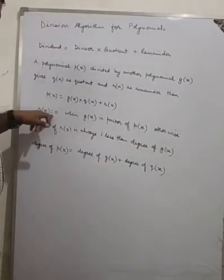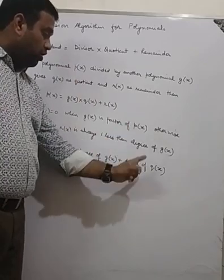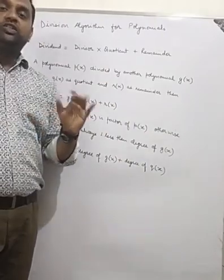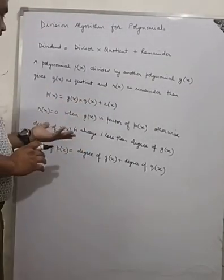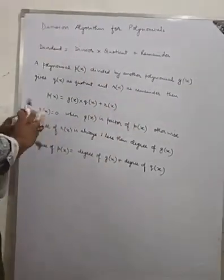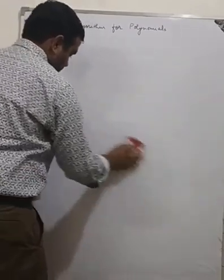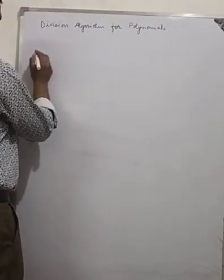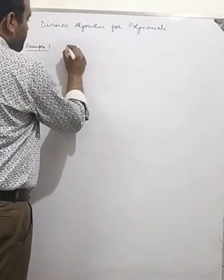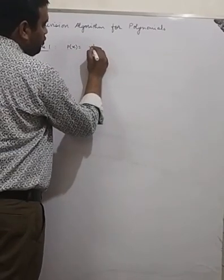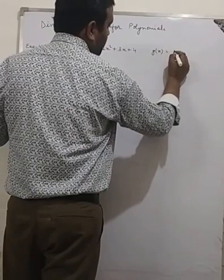R(x) equals 0 when G(x) is a factor of P(x); otherwise the Degree of R(x) is always 1 less than the Degree of G(x). Now let's take one example to understand this concept. I am going to write one polynomial P(x) and another polynomial G(x) and show you the division algorithm.